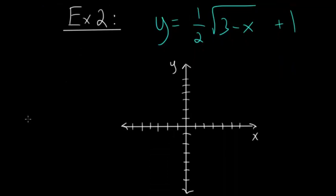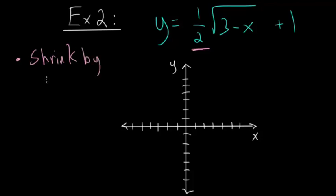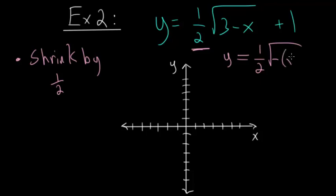The second example is y equals one half times the square root of 3 minus x, plus 1. The one half out front multiplies all y values by one half, shrinking the graph by a factor of one half. When dealing with the inside expression, I like to factor out the negative and rewrite it as one half times the square root of negative x minus 3, plus 1, making the transformations easier to see.